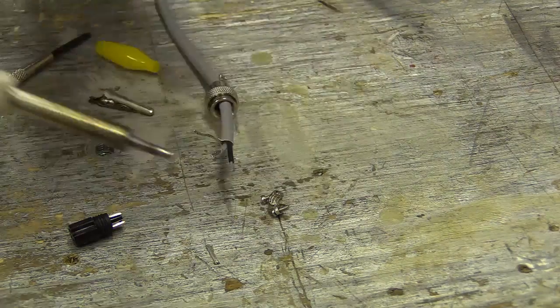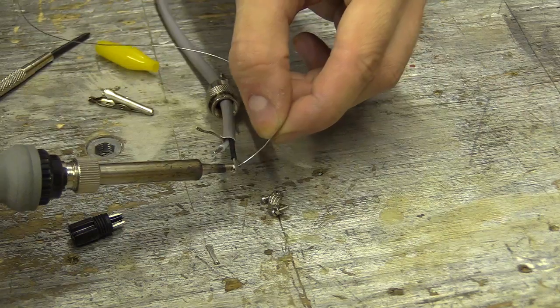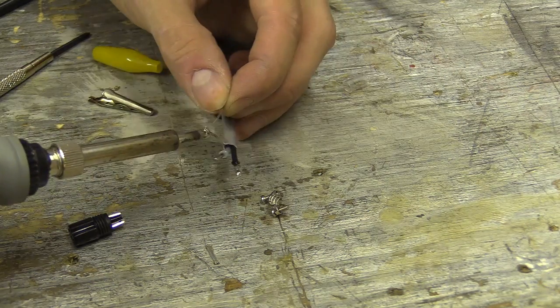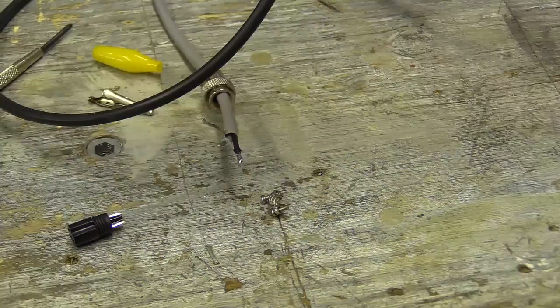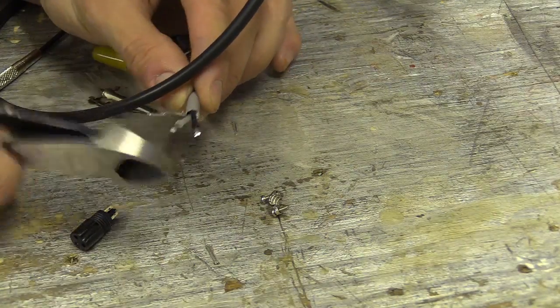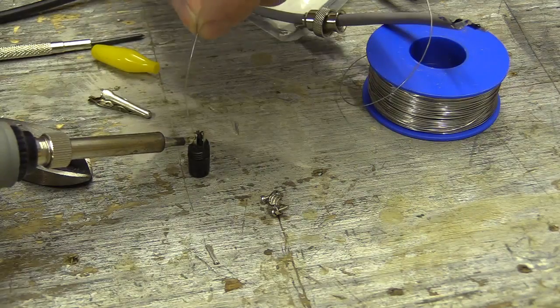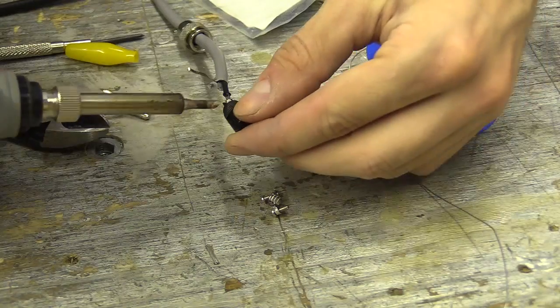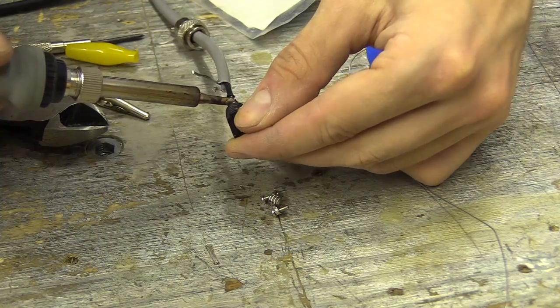I notice when I solder this particular type of wire, the sleeving shrinks a little because of the heat. This might be because I'm using thin solder and keeping the iron on the core wire for too long. So this doesn't become a problem in the future, once the wire is tinned I snip the ends down a little so I don't have too much metal exposed.